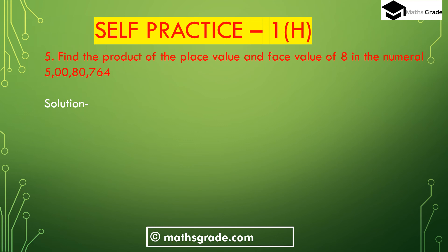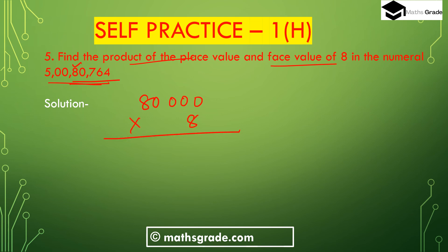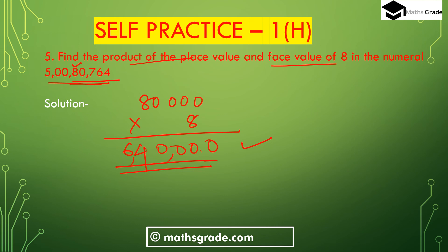Question number 5: Find the product of the place value and face value of 8 in the numeral 5,80,764. The place value of 8 is 80,000 and the face value of 8 is 8 (the digit itself). Multiplying 80,000 by 8 gives 6,40,000. So the product of the place value and face value of 8 in 5,80,764 is 6,40,000.